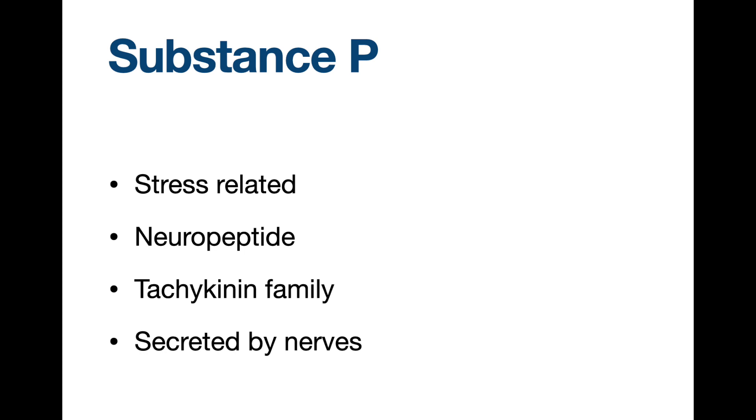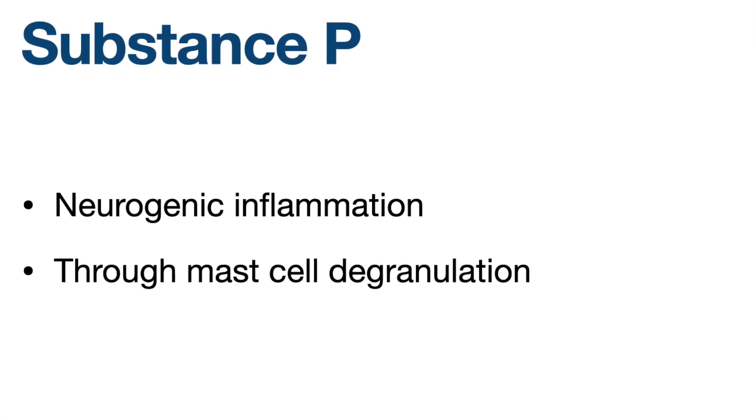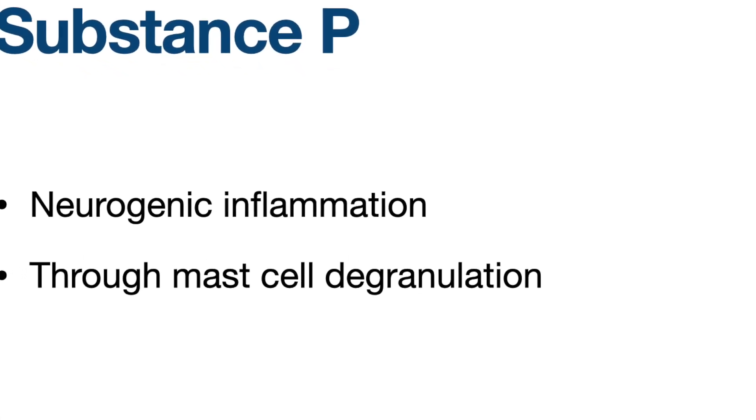Substance P is secreted by neuronal cells and released from cutaneous peripheral nerve terminals. It is a pro-inflammatory mediator inducing neurogenic inflammation via mast cell degranulation. This may be the pathway through which stress induces abnormalities in the hair cycle. Anxiety and depression are also possible inducers of trichodynia.